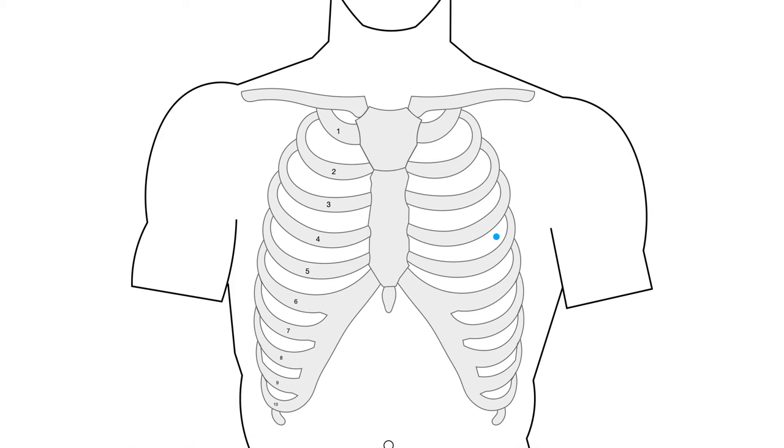So, I think we can just put a picture of that up. Pericardium 1 is in the 4th intercostal space, 1 cun lateral to the nipple, or 5 cun lateral to the midline.